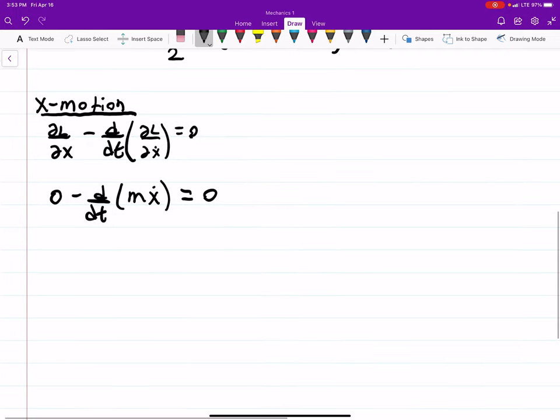And then when we take the time derivative, the mass stays constant, so zero is just there. Minus MX-double-dot equals zero, which just means that the X-acceleration is zero. There is no acceleration in the X-direction.